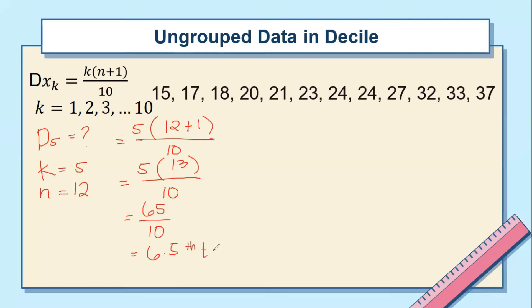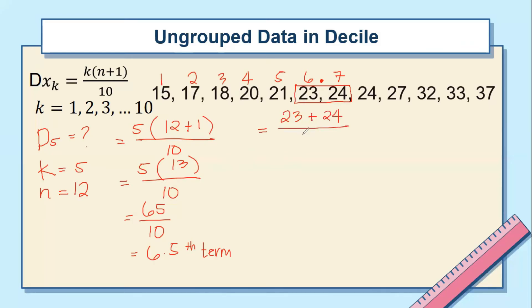Take note — this is the term. Applying the same ruling as percentile, since the result is 6.5, locate the 6.5 position in the data: first, second, third, fourth, fifth, and sixth. So 6.5 is between the 6th and 7th term. Add the two data values and divide by 2. Therefore, the fifth decile is equivalent to 23.5.